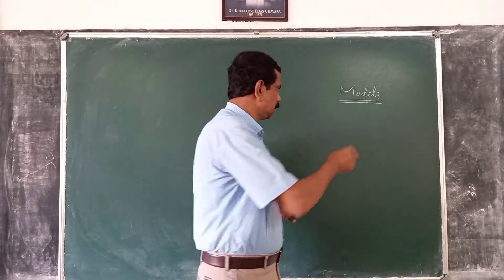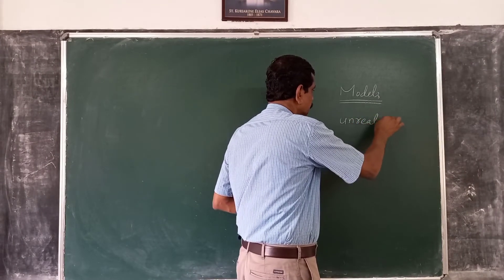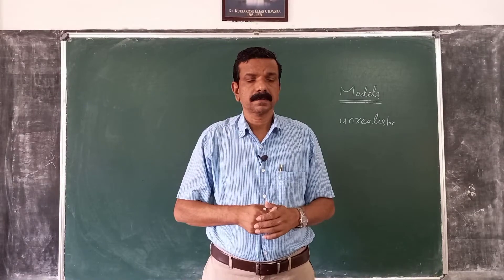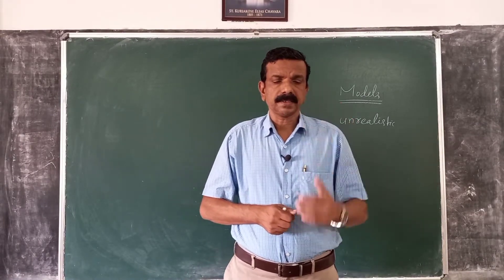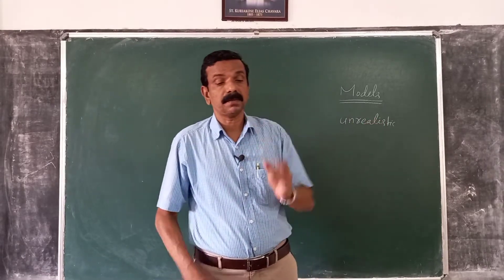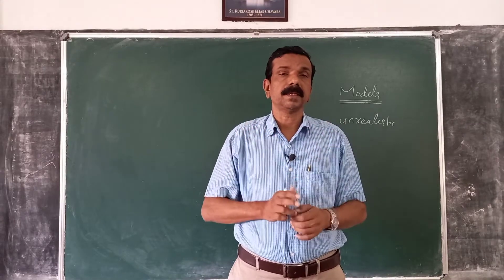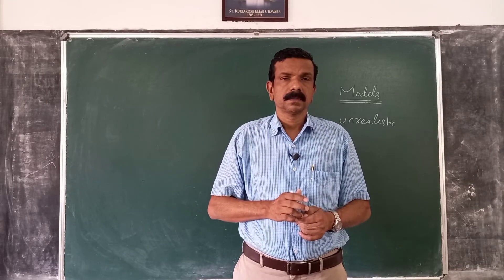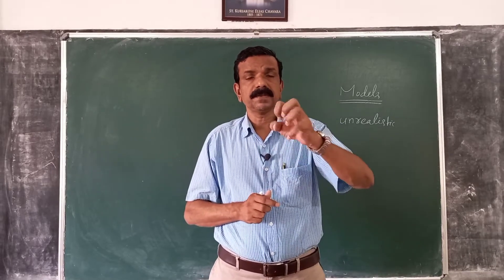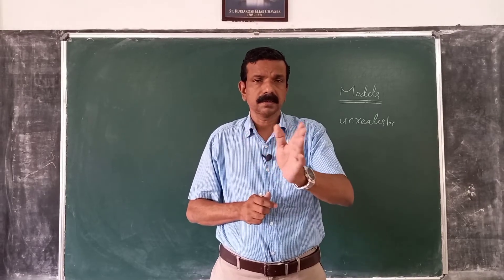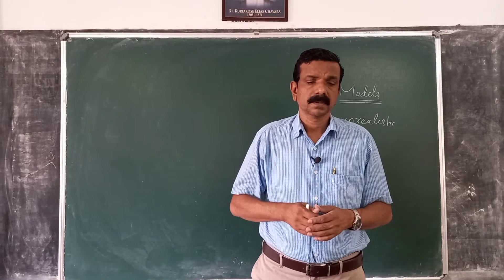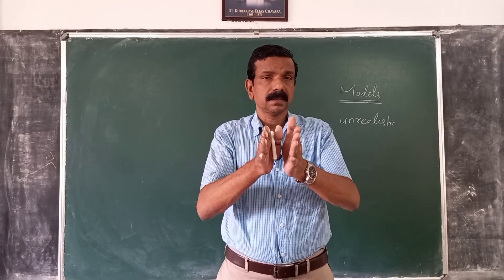Although it may be unrealistic to focus only on these three factors, demand theory postulates that these three factors are capable of explaining consumer behaviour and demand. A model is a simplified representation of reality, and in this example, quantity demanded is specified as a function of three variables even though quantity depends on many other variables. That is why we say it is a simplification of reality.